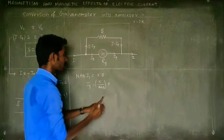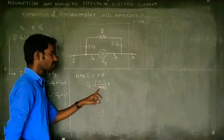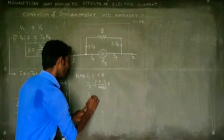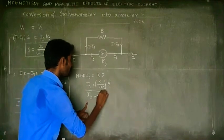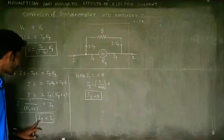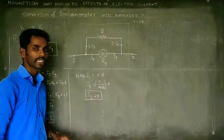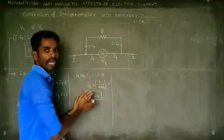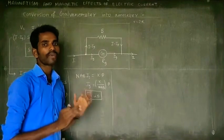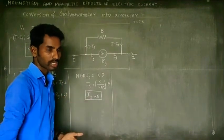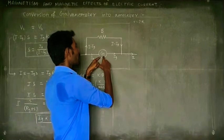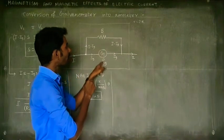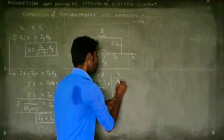Remember: k, n, A, and B are constants — number of turns, area of the coil, and magnetic field are constant. So Ig is proportional to theta, and since Ig is proportional to I, I is proportional to theta. This whole arrangement is the ammeter. The ammeter's effective resistance means the galvanometer resistance RG and the shunt resistance S are connected in parallel, so we find the effective resistance.